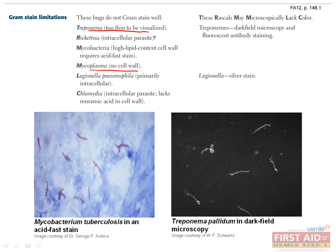Treponema is too thin to be visualized, so one must use dark field microscopy or fluorescent antibody staining to see it. Rickettsia, Legionella, and Chlamydia are intracellular parasites and difficult to see; therefore, you must use immunofluorescent staining to visualize these organisms. Legionella can also be visualized by silver stain.